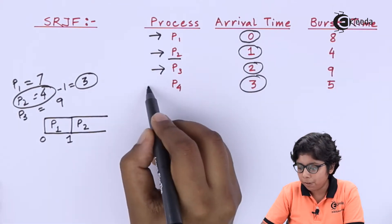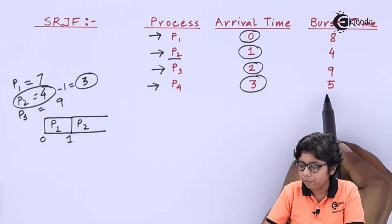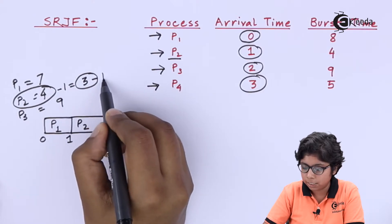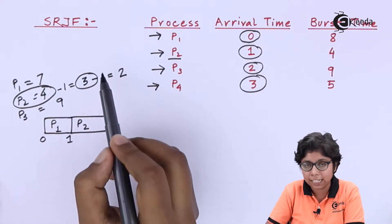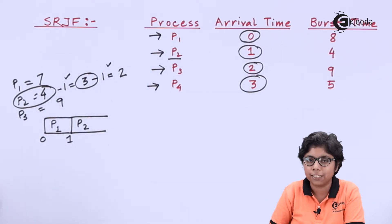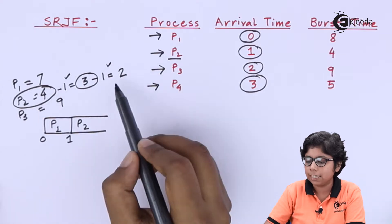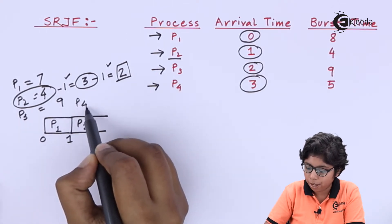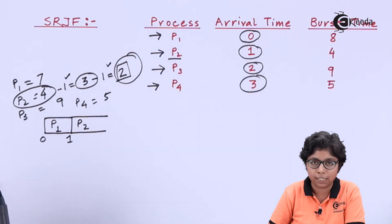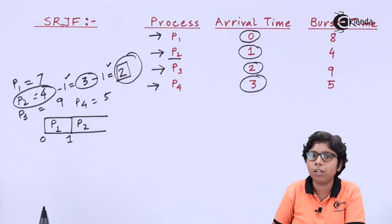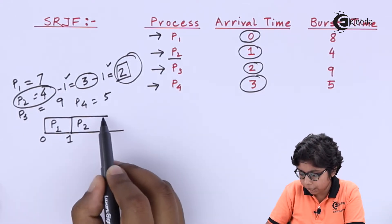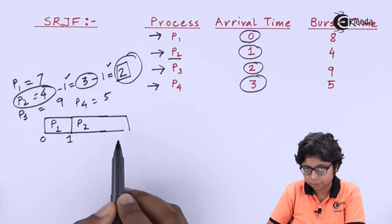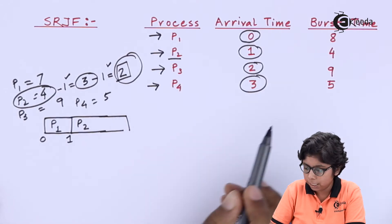At 3ms, P4 arrives with a burst time of 5ms. P2 has now executed 2ms of its burst time, leaving 2ms remaining. Since P2 at 2ms is shorter than P4 at 5ms, P2 continues and finishes its execution. No other process arrives, so P2 completes its total execution at 5ms.